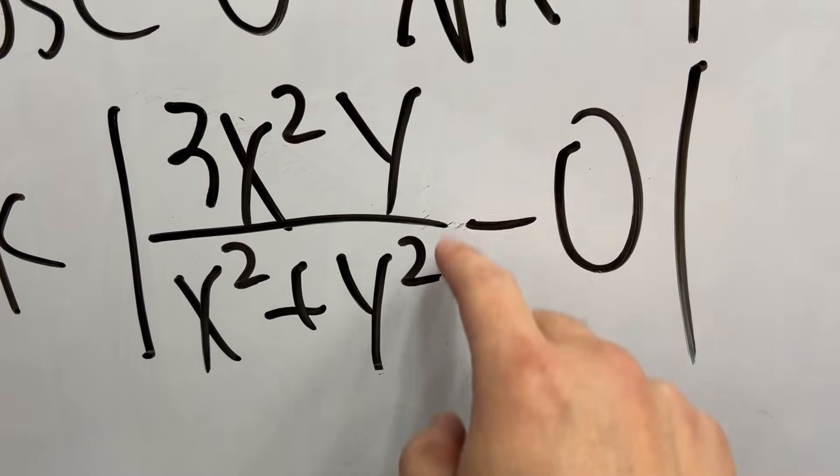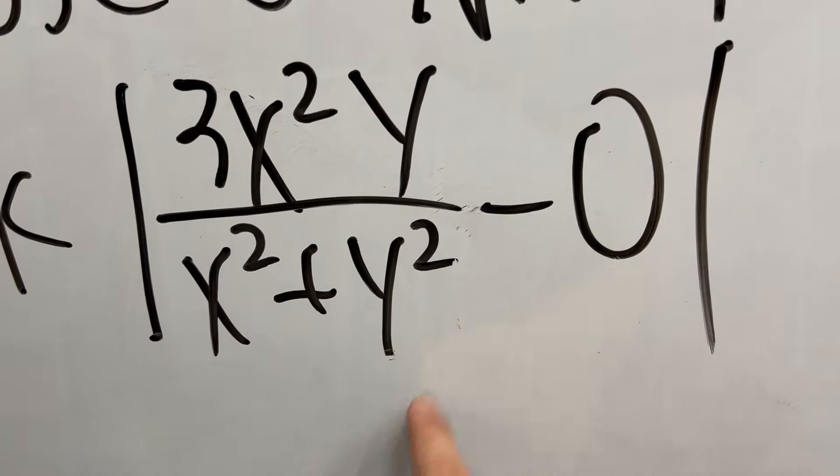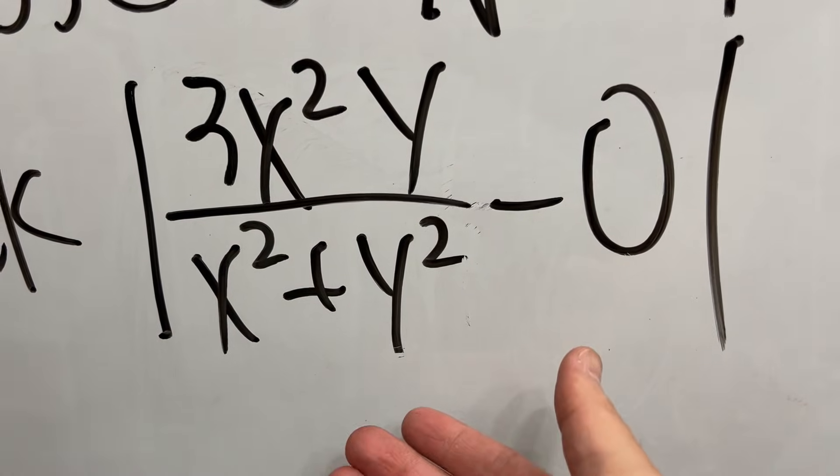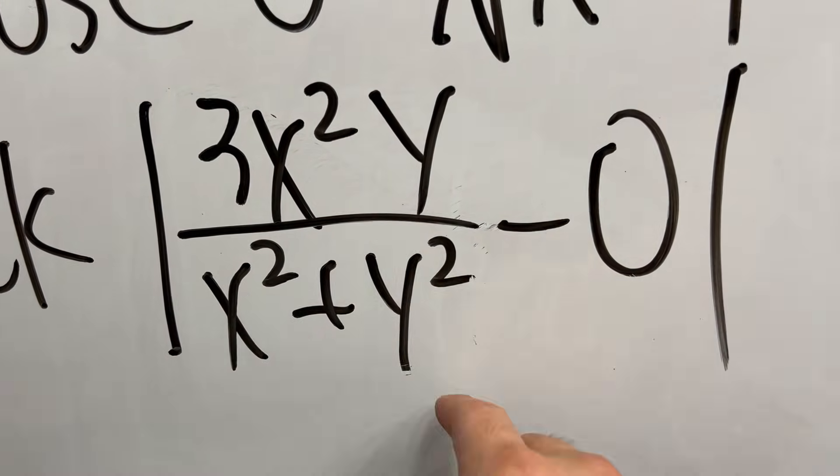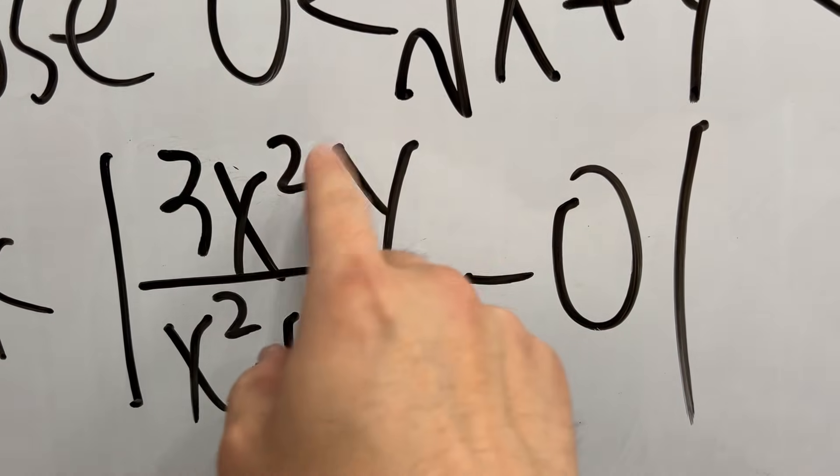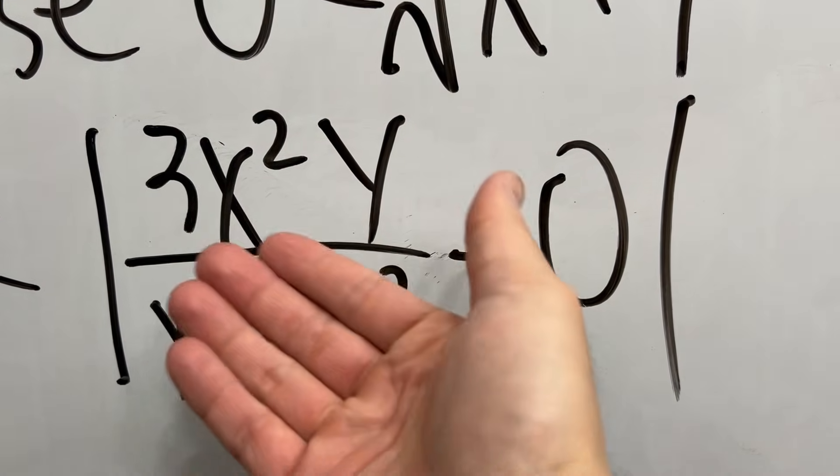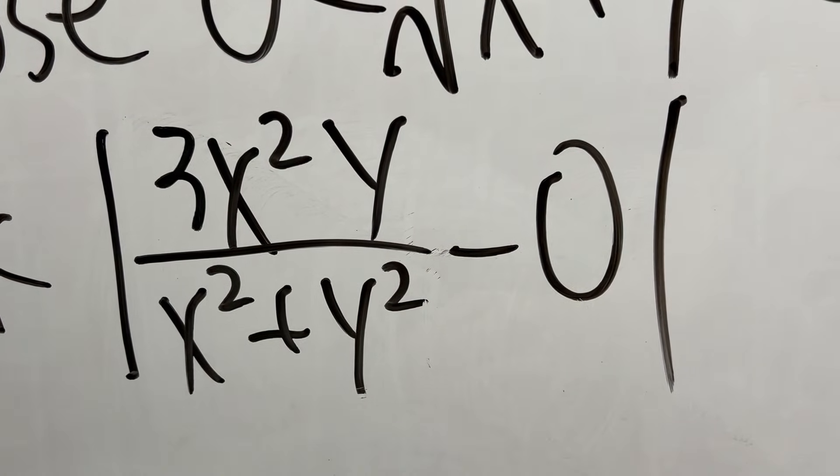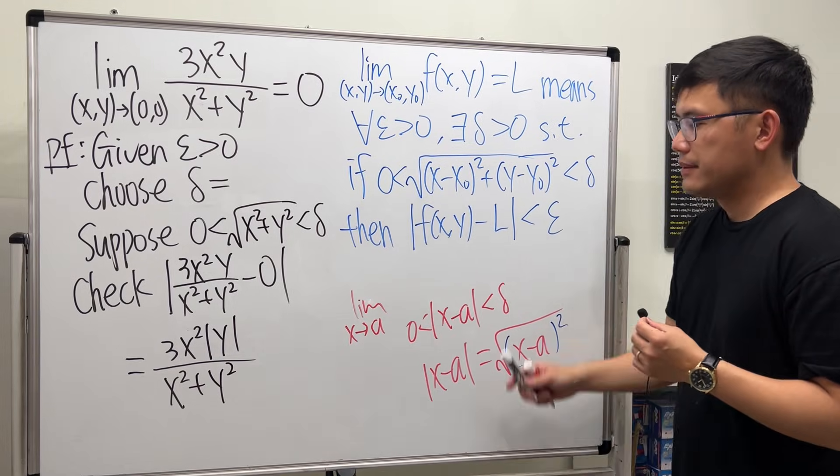Second, absolute value of a quotient is the quotient of the absolute value. For the bottom, x² + y² is never negative because we are just using real numbers here. So, we don't need the absolute value on the bottom. And then the absolute value of a product is the product of the absolute values. And then the absolute value of x² is just x² because x² is never negative. So, we just need the absolute value around the y.